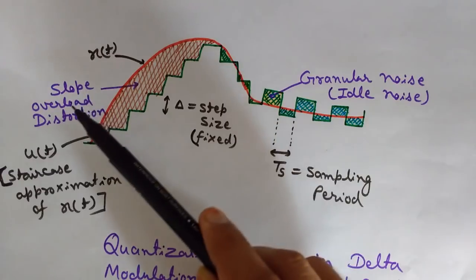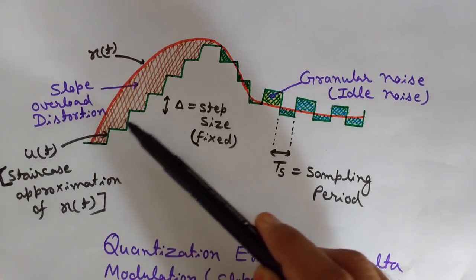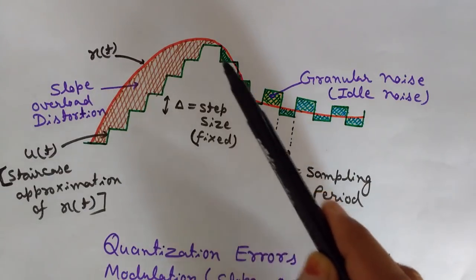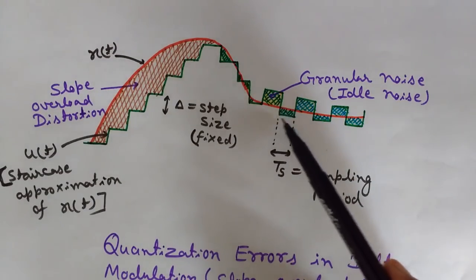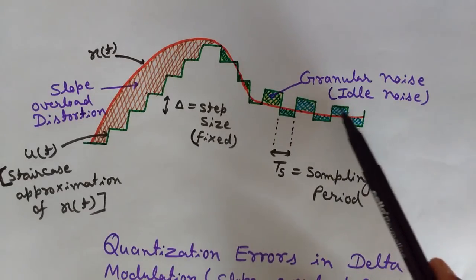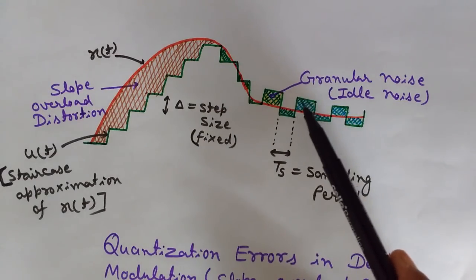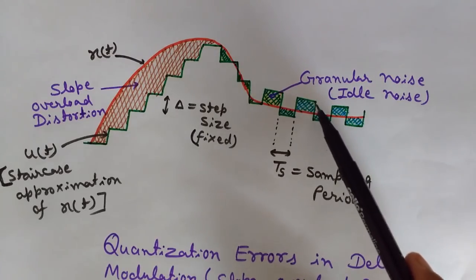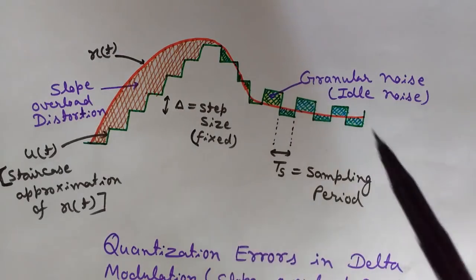To overcome slope overload distortion in adaptive delta modulation, we increase the size of the step when large variations are present in the input signal. On the other hand, where the step size is too large and causes granular noise, in adaptive delta modulation we decrease the size of the step to reduce that error.